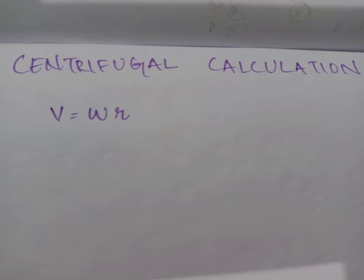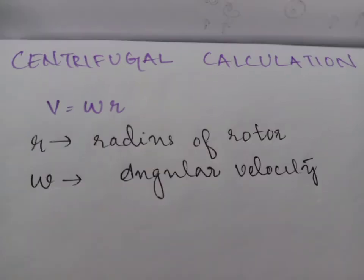The very basic equation is V equals omega r, where r is the radius of rotor and omega is angular velocity.